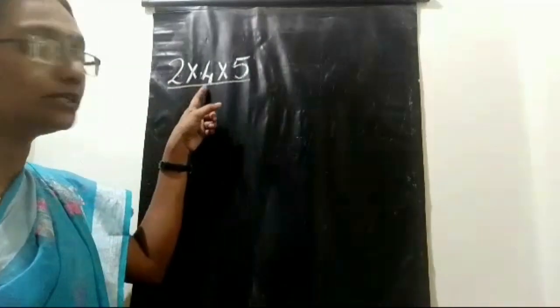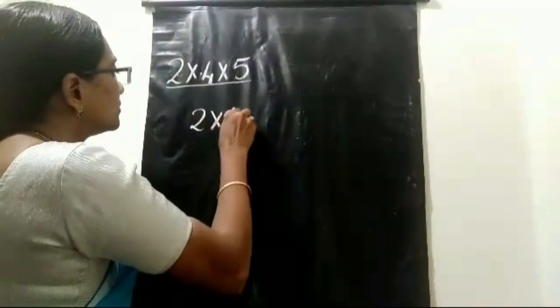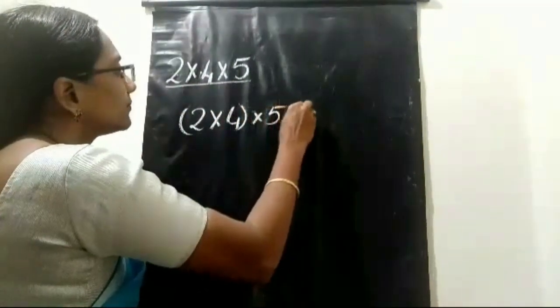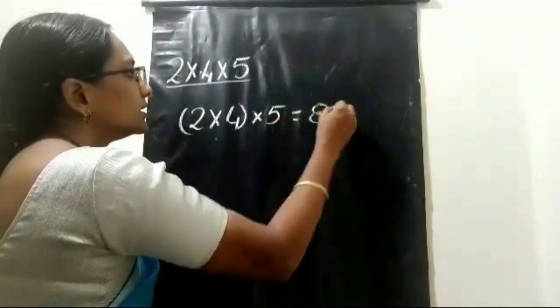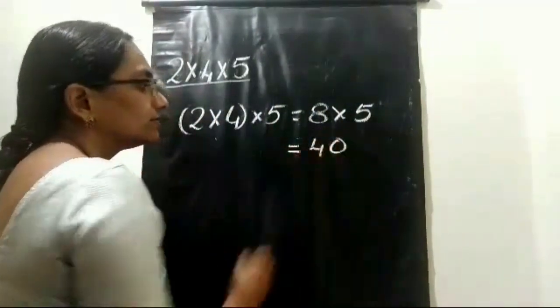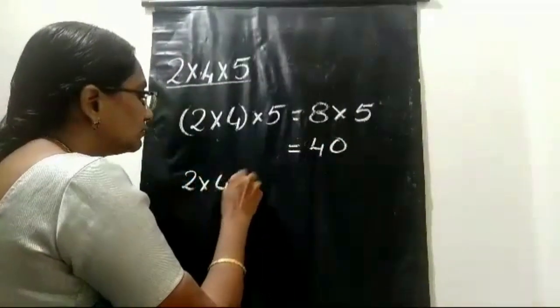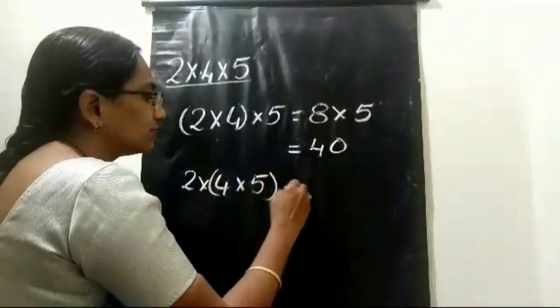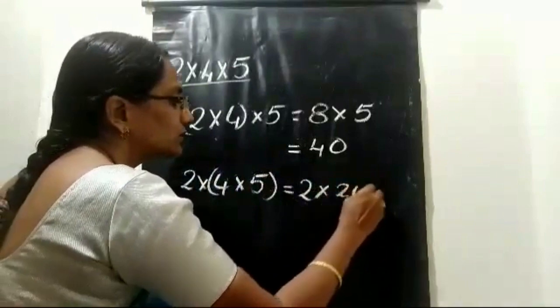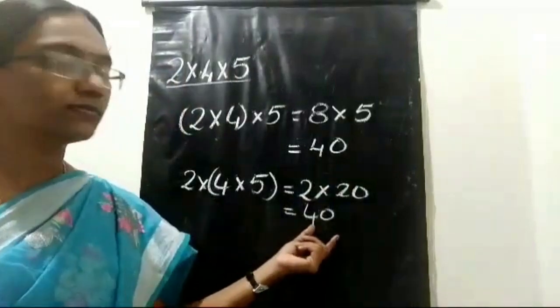We know that we can change the order of the numbers while multiplying. If we change the order of the factors we get the same product. See this example: 2 into 4 into 5. First multiply 2 into 4: that is 8, then 8 into 5 is 40. Now change the order: multiply 4 into 5 first, that is 20, then 2 into 20 is also 40.